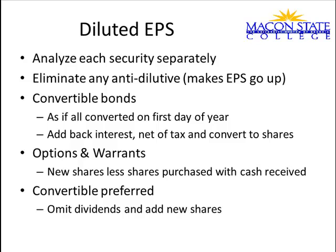For the convertible bonds, you treat it as if they all converted on the first day of the year. So there would be no interest on those bonds — you would add that interest back. That interest expense is eliminated and the tax that is sheltered is eliminated. And then you add the number of new shares that the bondholders would get into the denominator.